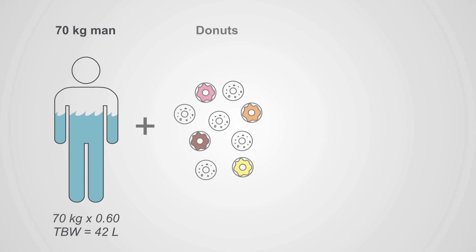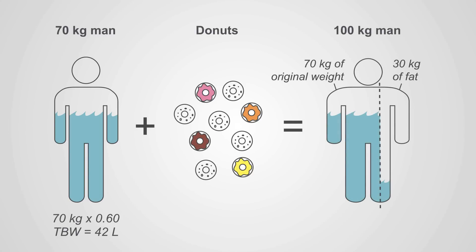Suppose this patient then starts to eat a lot of donuts, doesn't exercise, and gains 100 kilograms. What's his total body water now? You'll take the original patient, 70 kilograms and 42 liters of water, and we add on an additional 30 kilograms of fat, which is only 10% water.